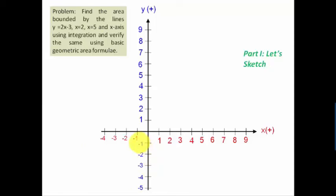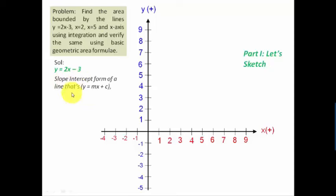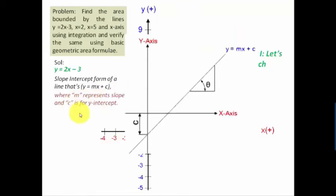We're going to kick off by drawing the sketch of the line y equals 2x minus 3. This line resembles perfectly the slope-intercept form which says y equals mx plus c, where m represents the slope and c is the y-intercept. Let's understand what m and c are with the help of a simple figure.